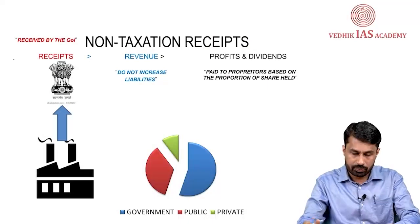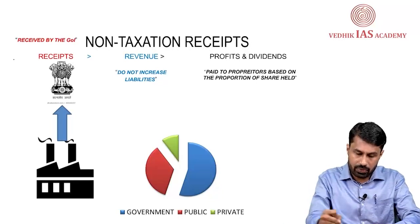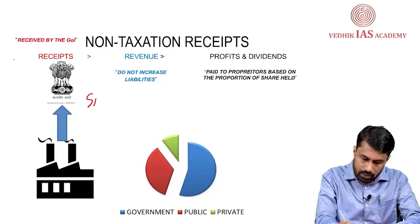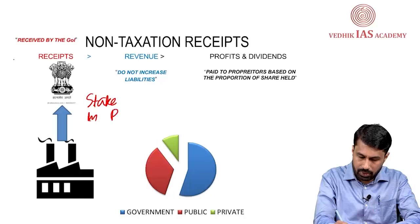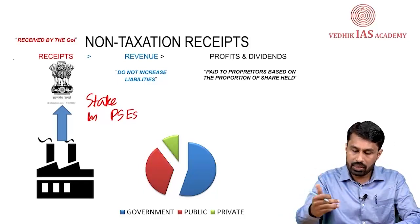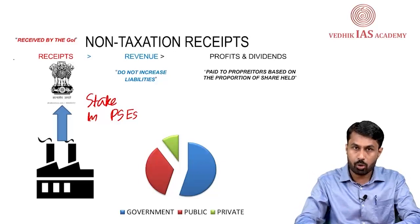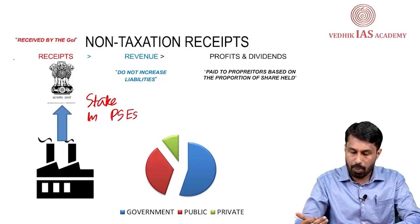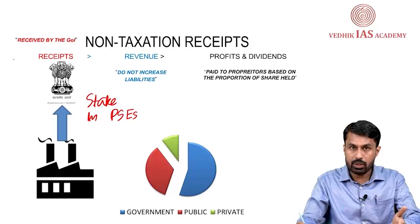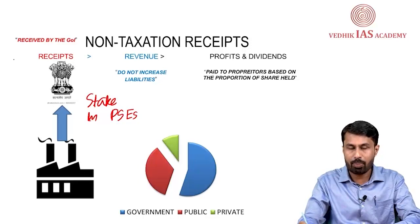Moving forward, let us understand the concept. Here, the public sector enterprises — the Government of India holds some stake in the public sector enterprises. The government holds a majority stake, shown as blue in the pie chart. Then the public — individuals, citizens — would also hold a stake in a public sector enterprise.